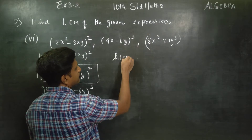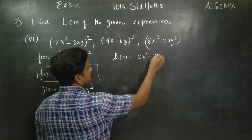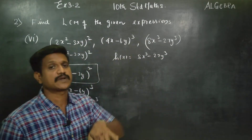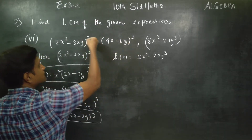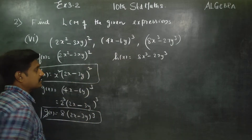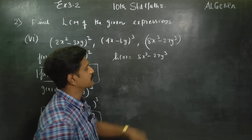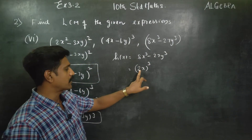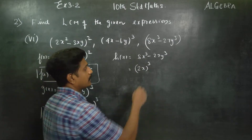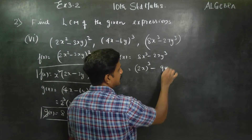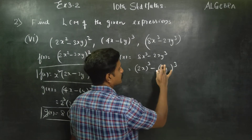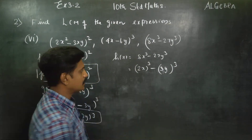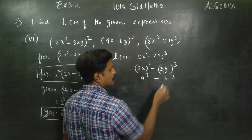h of x: 8x cube minus 27y cube — 1 cube minus cube. Factorize simple factors. 8x cube minus 27 — 3y cube, 3x3. 3y cube. This is one algebra formula: a cube minus b cube.